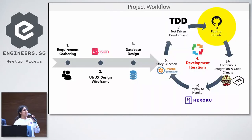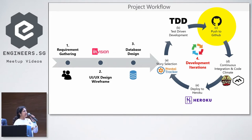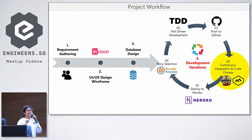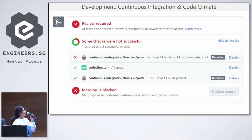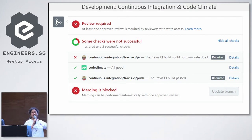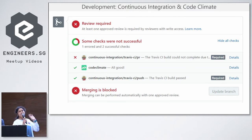Once everything passes locally, we push that code onto GitHub. From GitHub, the code is picked up by Travis, a continuous integration tool, and by Code Climate, which checks the health of your code and how well you are writing it. In this picture, you can see Code Climate is giving you a green sign — the code is good. But Travis is giving you a red signal, meaning something is amiss. We've made a blunder there.